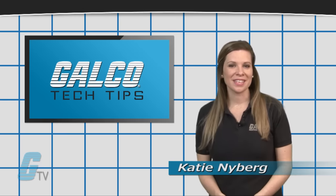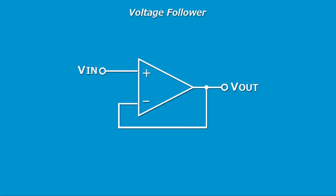Hi, I'm Katie with your GalcoTV Tech Tip. A voltage follower is an operational amplifier circuit with a voltage gain of 1.